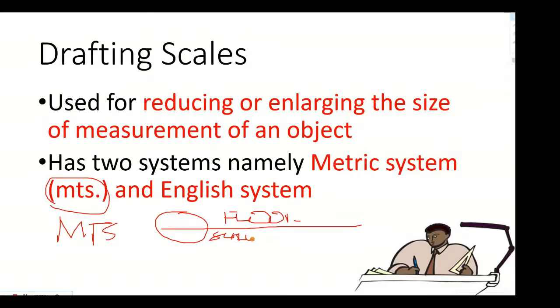It's hard to write with a mouse. Scale—written there is what scale is used. For example, 1 is to 100 mts. So that means just from that title, you'll know right away you're in metric system.